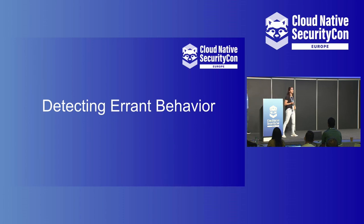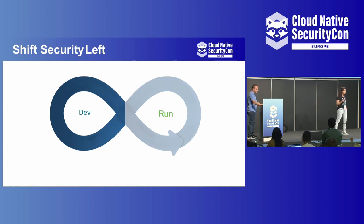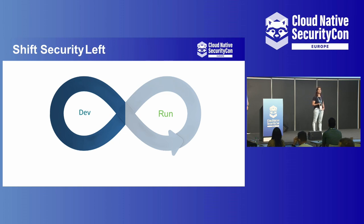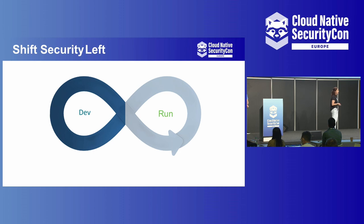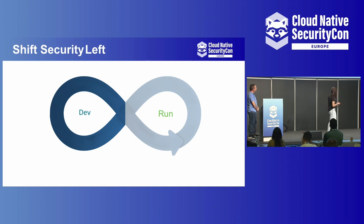I'm going to be talking about detecting errant behavior. All those security controls and best practices that Eric walked us through are super valuable when we want to minimize the blast radius and protect our applications. Dev teams should really pay attention to these — not running containers as root, dropping capabilities, not leaving network tools that hackers can use if they break in, and also using admission controllers as a last frontier before sending applications to production. But many of those apply better in the development phases of the application lifecycle — what is known in the field as shift security left.